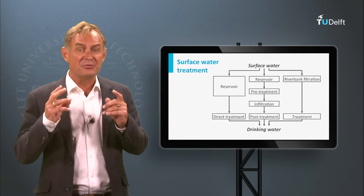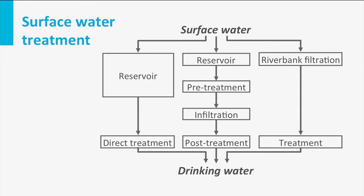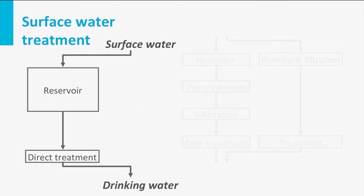Surface water can be treated in three different ways. During direct treatment, the surface water is taken in, stored in a reservoir for several months, and then passed through a treatment plant. An alternative is that the water is first pretreated to remove turbidity, infiltrated in an aquifer, and then post-treated. Finally, water can be taken in from the riverbanks, abstracting indirectly the water from the river. This riverbank groundwater is then treated to produce safe drinking water. Today we will focus on direct surface water treatment.